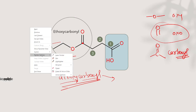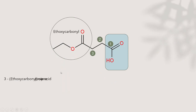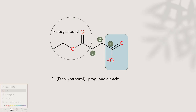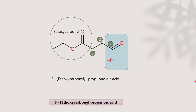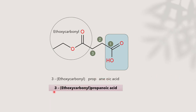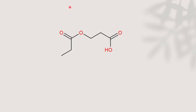So the full name becomes 3-ethoxycarbonyl propanoic acid. The branch is at position 3, then the root word, no unsaturation so 'an,' then 'oic acid' — dropping the 'e' because two vowels come together — giving '3-ethoxycarbonylpropanoic acid'.